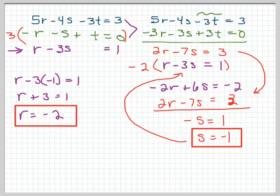And then finally we'll figure out what our t value is. I'll use the equation up here in green again. I'll go negative of r, so it's negative negative 2, minus s, but s is negative 1, so it's negative negative 1, plus t equals 0. That's 2 plus 1 plus t equals 0. So 3 plus t, or take that 3 to the other side, t equals negative 3.